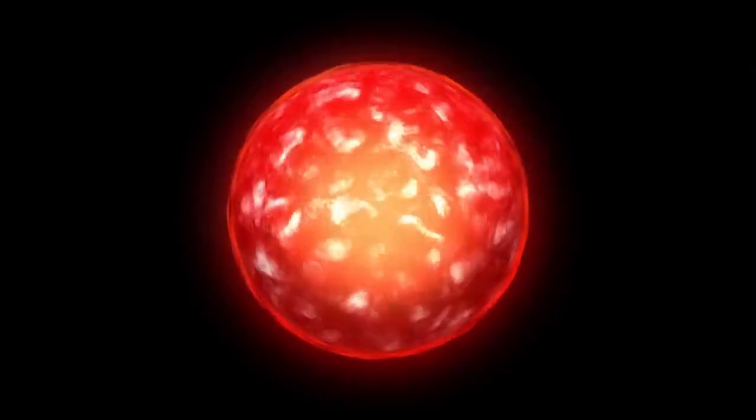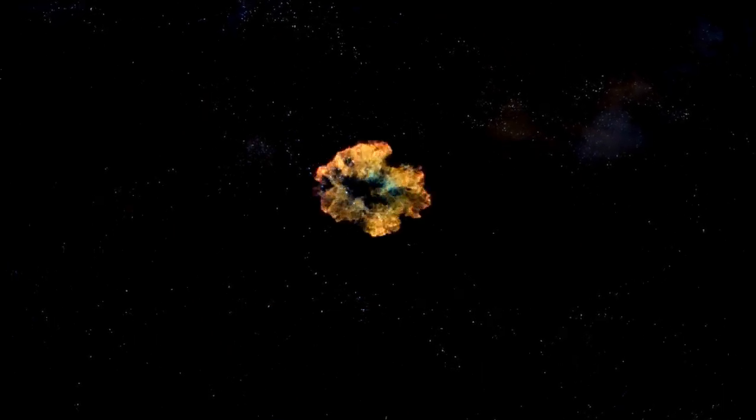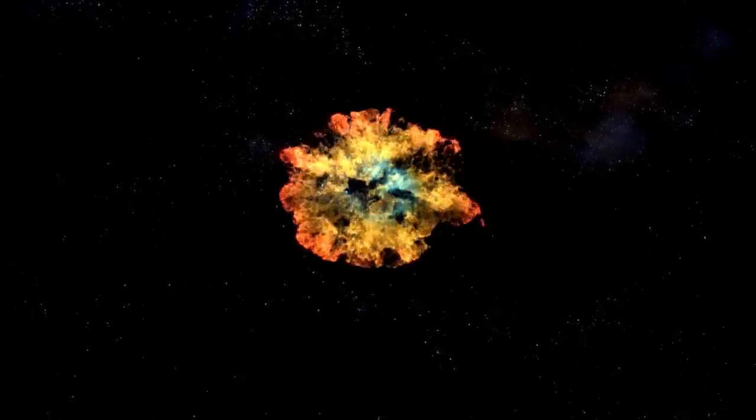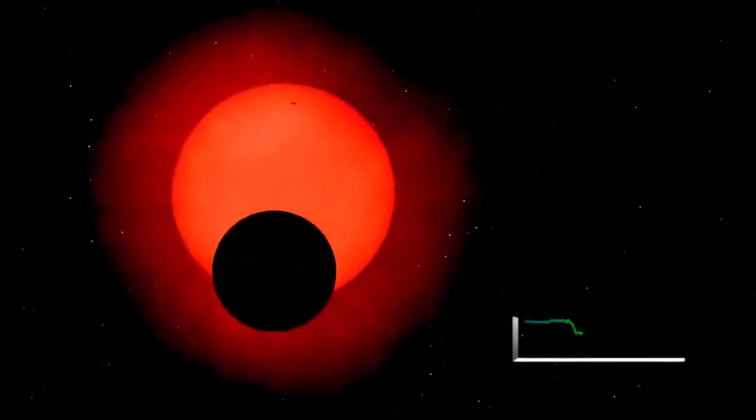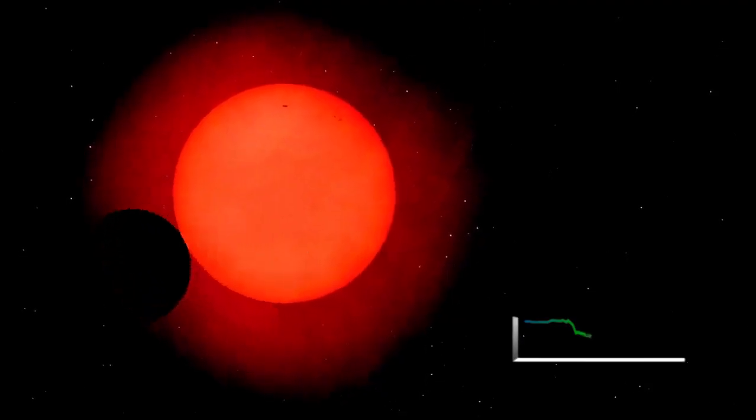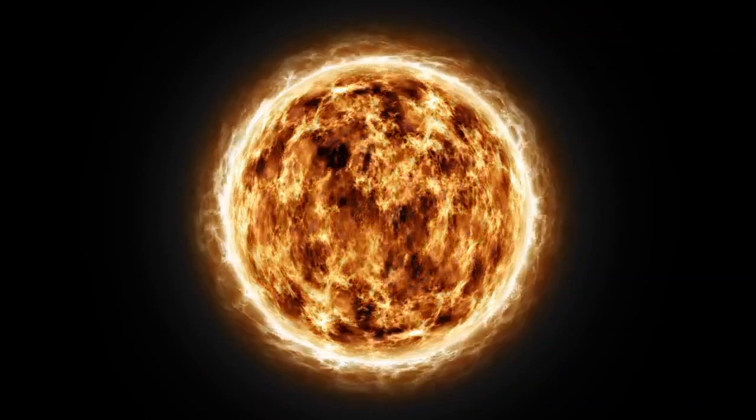In the case of Betelgeuse, a red supergiant nearing the end of its life cycle, this balance has become increasingly unstable. As the star depletes its core hydrogen fuel, the nuclear fusion processes that sustain it undergo significant changes. When hydrogen fusion slows in the core, radiation pressure decreases, causing the gravitational pull to momentarily gain the upper hand. This results in the contraction of the star's outer layers. However, the contraction leads to an increase in core temperature and pressure, reigniting fusion processes, particularly involving heavier elements like helium.